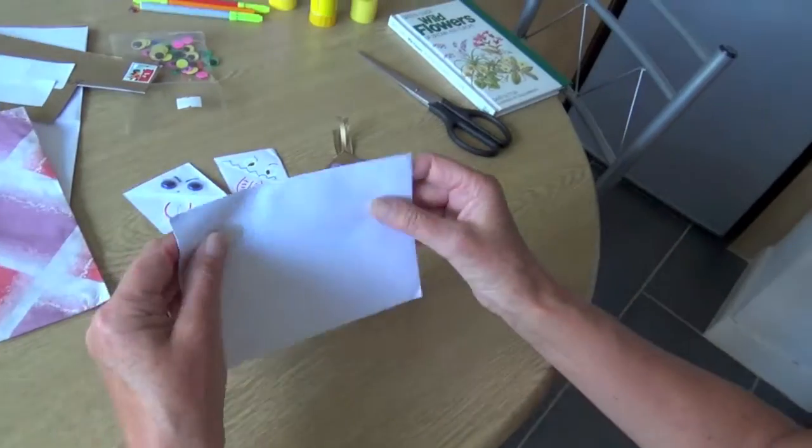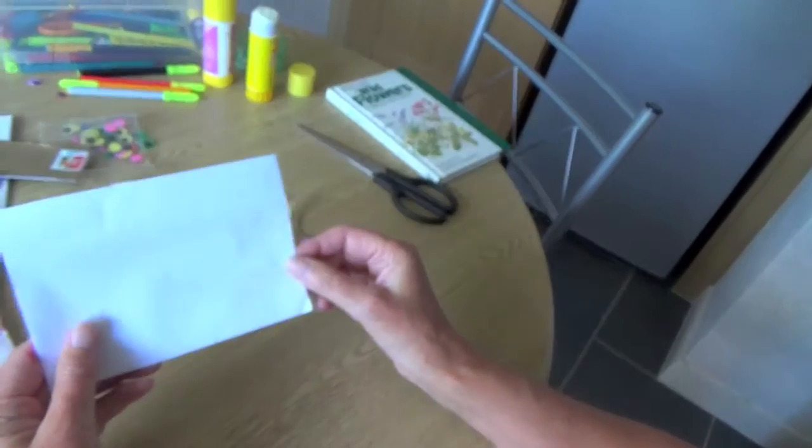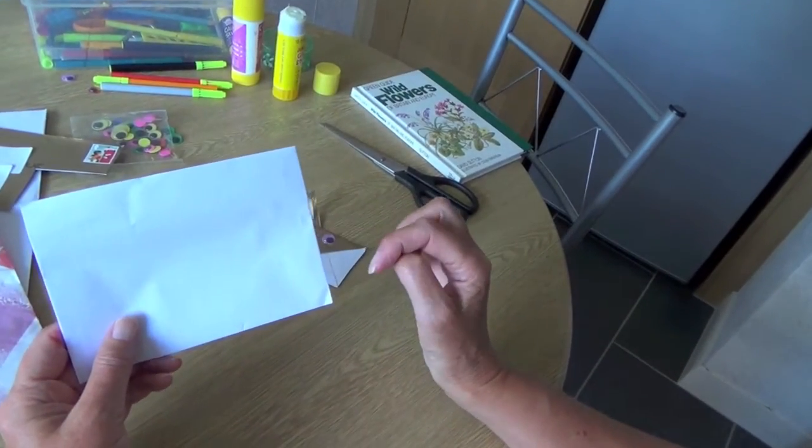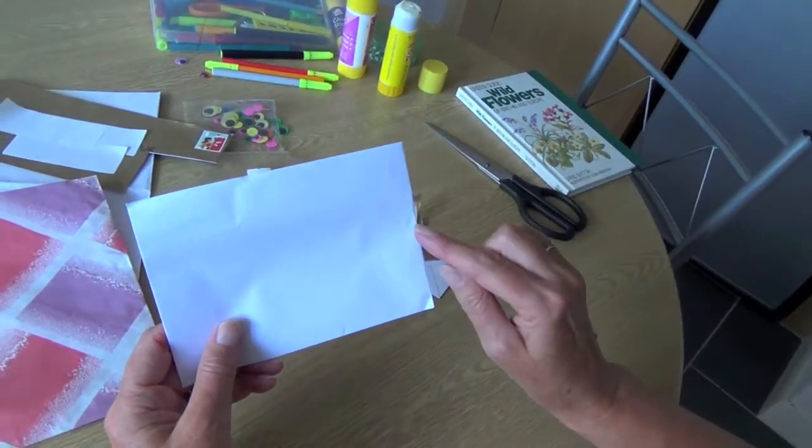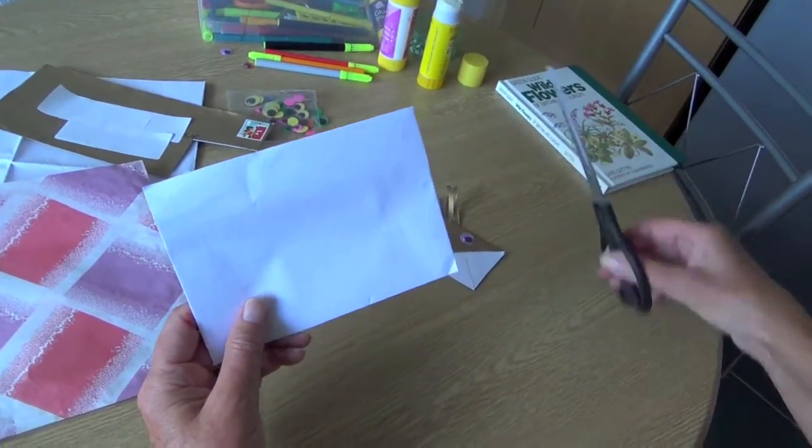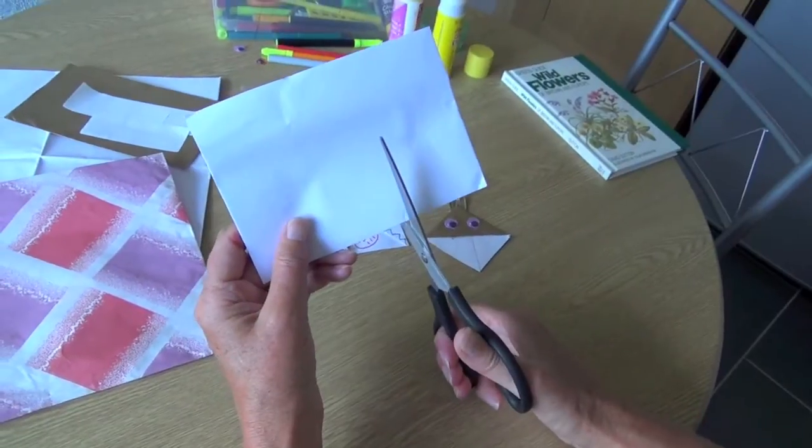Now all you need to do is seal up the envelope. Depending on the size of it, you could get four from each envelope but I'll probably only be able to get two from this and you simply cut the corner off.